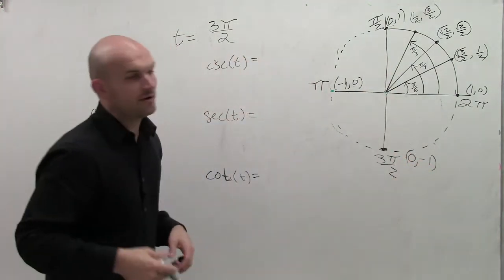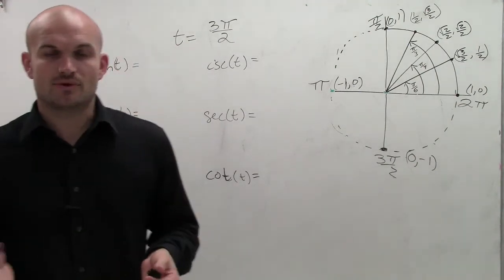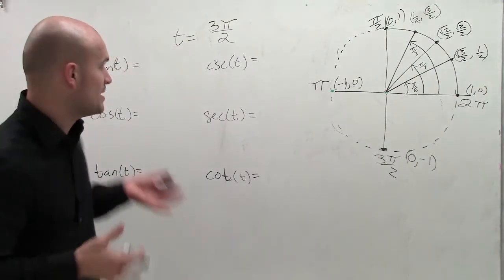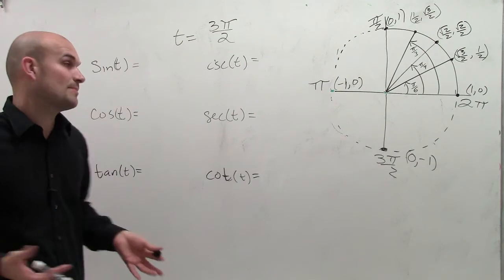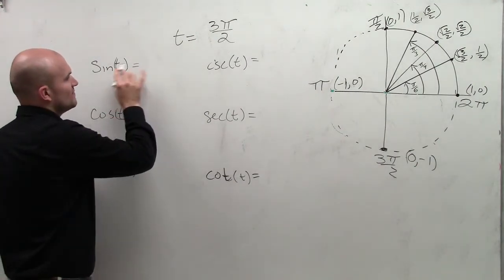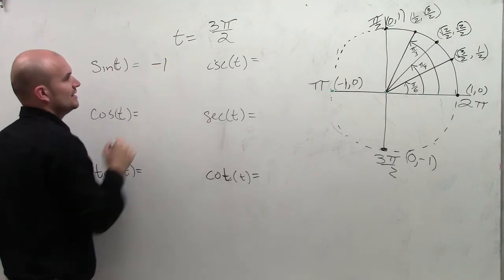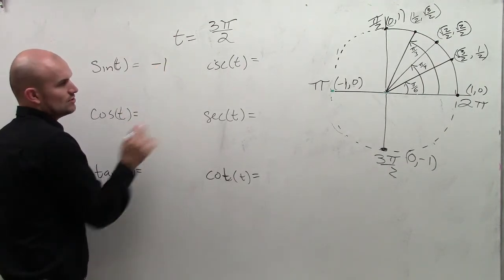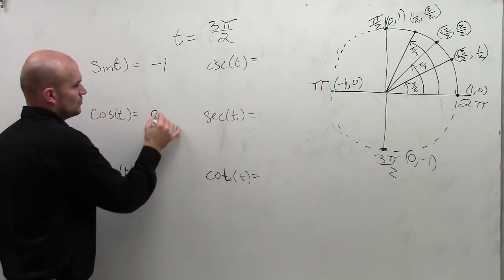When evaluating trigonometric functions, remember what they represent. Sine represents the y-coordinate, so sin(t) = -1. Cosine represents the x-value, so cos(t) = 0.